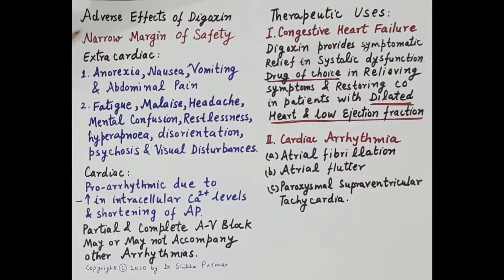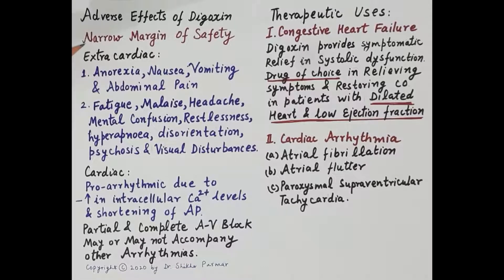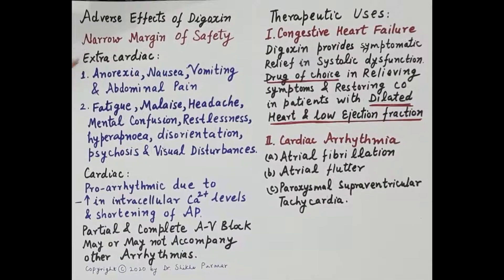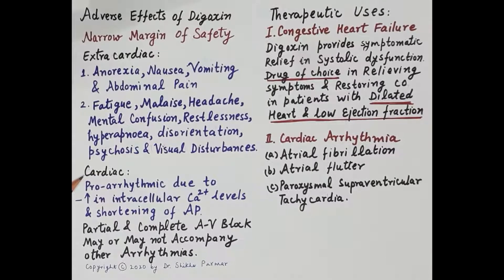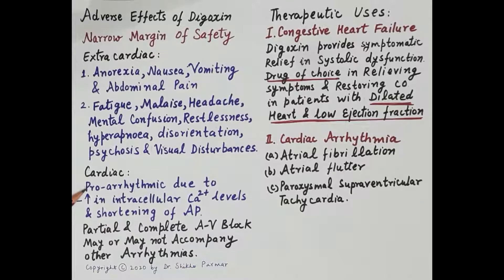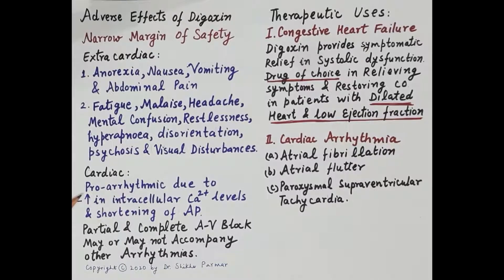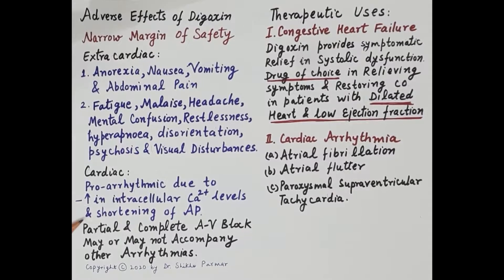Due to its narrow margin of safety — low therapeutic index — and profound pro-arrhythmic effects, digoxin has limited use in managing congestive heart failure. Extracardiac adverse effects include anorexia, nausea, vomiting, abdominal pain, fatigue, malaise, headache, mental confusion, restlessness, hyperpnea, disorientation, psychosis, and visual disturbances. The cardiac adverse effect is its pro-arrhythmic effect, produced because of increased intracellular calcium and shortening of the action potential.